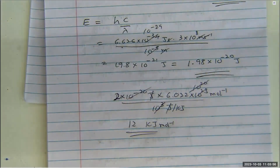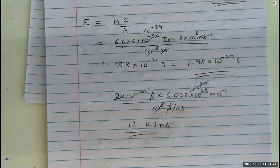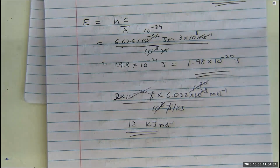That's the conversion between joules per photon and kilojoules per mole. Whenever you're asked to calculate the energy of a transition or energy of a photon, use E = hc/λ. That gives you the energy of a photon. To convert to kilojoules per mole, multiply by Avogadro's number and divide by 1000.